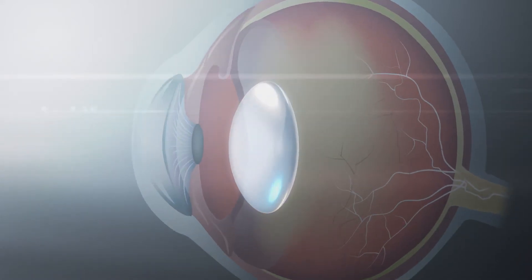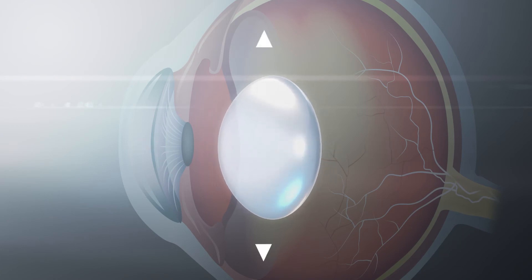Much like adjusting the focus on a camera, a healthy eye lens flexes and changes shape to properly focus on objects at different distances.